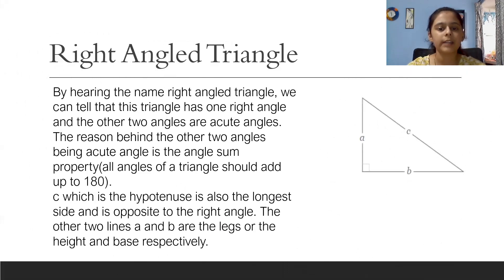By hearing the name right angle triangle, we can tell that this triangle has one right angle and the other two angles are acute. The reason behind the other two angles being acute angle is the angle sum property. All angles of a triangle should add up to 180 degrees.